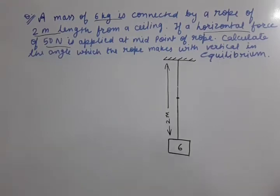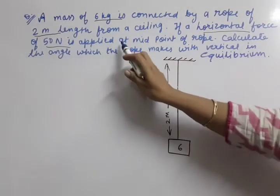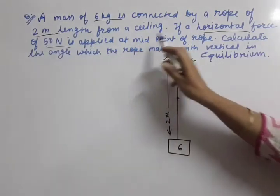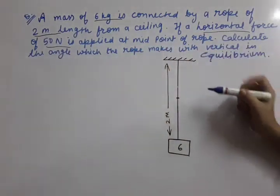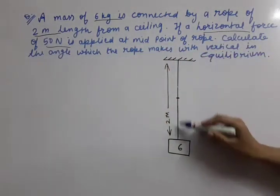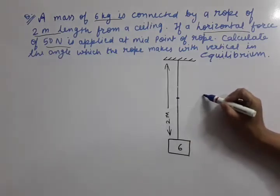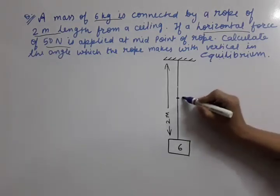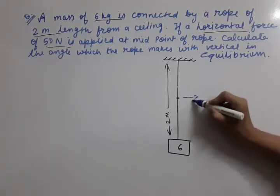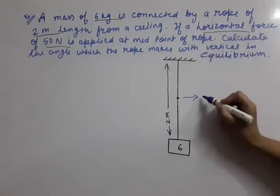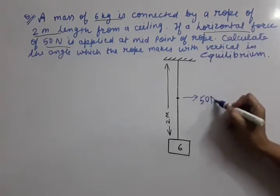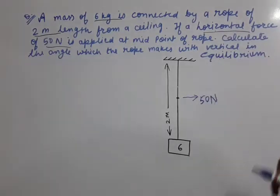Now the next line: if a horizontal force of 50 Newton is applied at the midpoint of the rope — so if this rope is of 2 meter length, at the midpoint that means at 1 meter distance, we have to apply a force of 50 Newton in the horizontal direction.